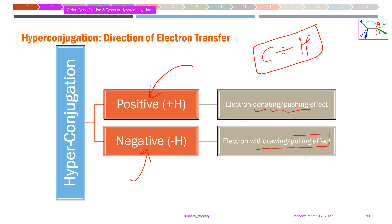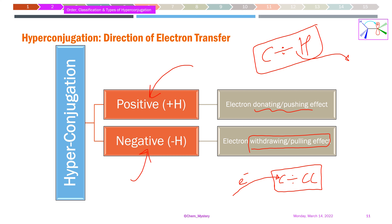In negative hyperconjugation, there is an electron-withdrawing effect. This can occur with carbon–chlorine bonds, as seen in methyl chloroform or benzoyl chlorides in reverse hyperconjugation. The C–Cl bond pulls electrons toward itself, while in positive hyperconjugation electrons are donated outward. This is how positive and negative hyperconjugation are distinguished from each other.